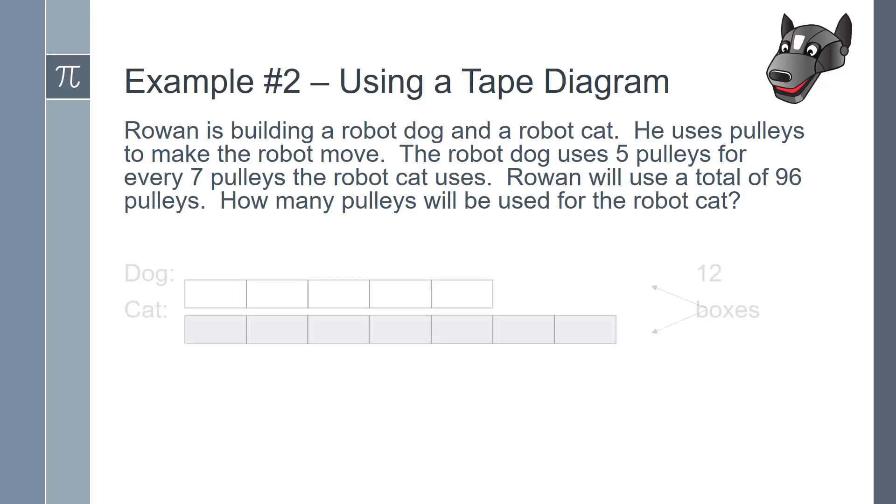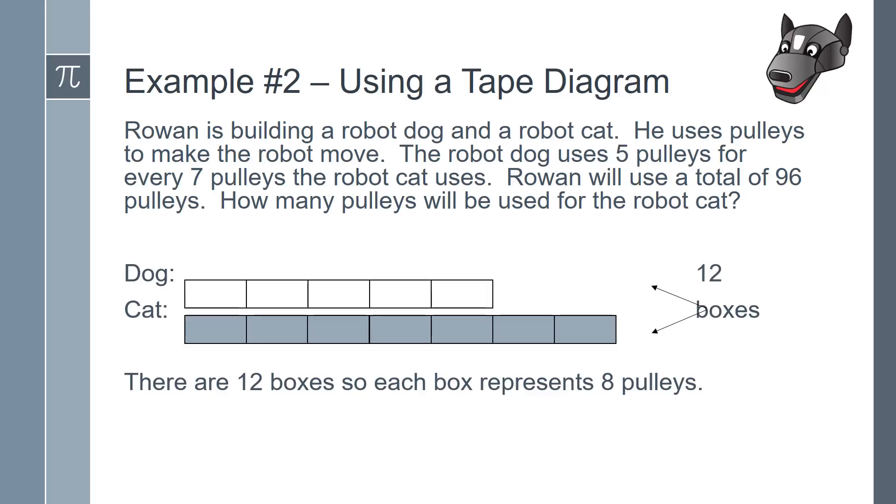Rowan starts by drawing a tape diagram with 5 boxes for the dog and 7 boxes for the cat. This makes for a total of 12 boxes. Because there are 96 pulleys represented by the 12 boxes, each box represents 8 pulleys.